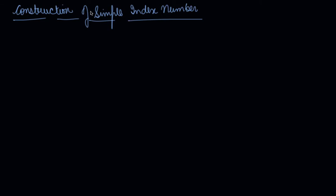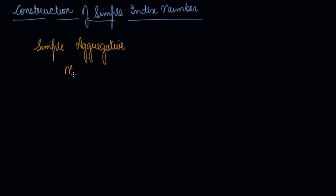In this video we will find out how to construct the simple index number. There are two methods of constructing a simple index number: the simple aggregating method and the price relative method.